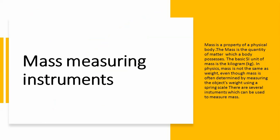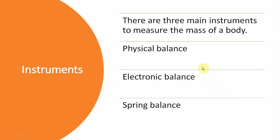Mass measuring instruments. Mass is a property of a physical body. The mass is the quantity of matter which a body possesses. The basic SI unit of mass is kilogram, denoted by kg. In physics, mass is not the same as weight, even though mass is often determined by measuring the object's weight using a spring balance.